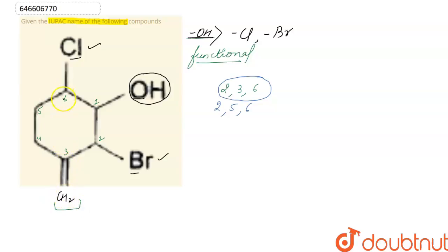Prefix for Cl is chloro, for Br it is bromo, and for CH2 it is methylidine. OH is the functional group in the given compound and the suffix is ol.